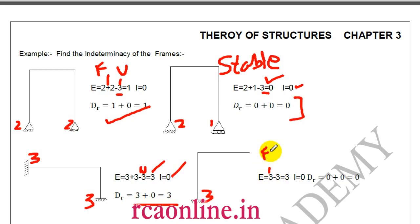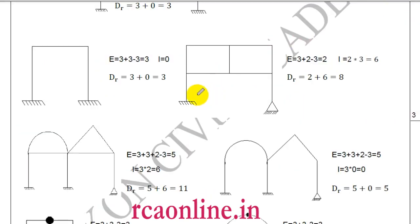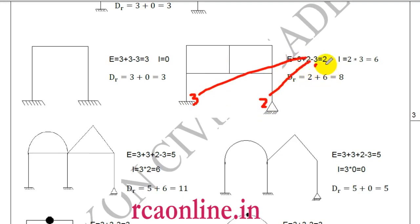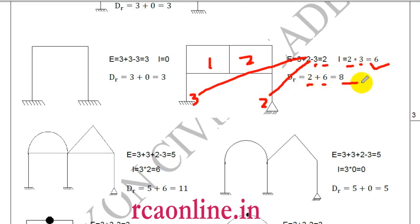Making a correction: static indeterminacy becomes 0 for that case. Next problem: f equals 3+2 equals 5, u equals 3, E equals 2 externally. There are two closed loops, so I equals 2×3 equals 6. Total static indeterminacy equals 2+6 equals 8.